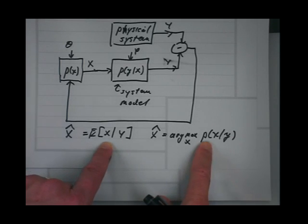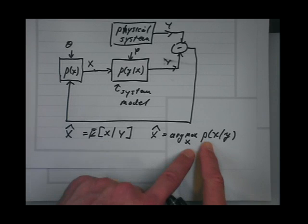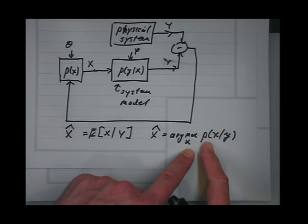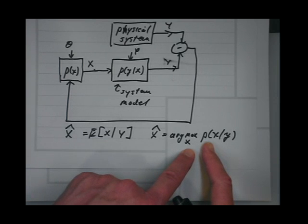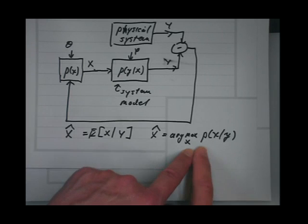So MAP is almost an indefensible criteria. But it's a whole lot better than alternative criteria which are based on nothing in particular. At least it's based upon some framework.